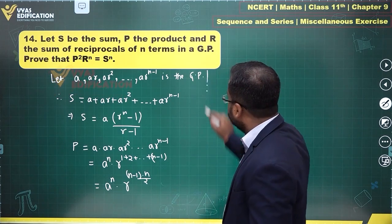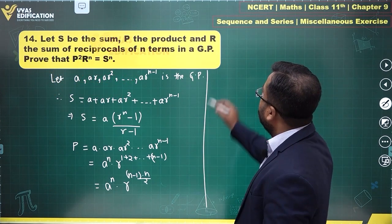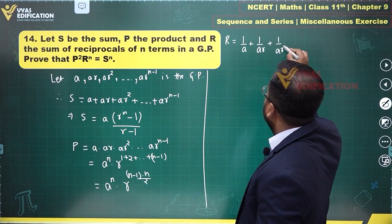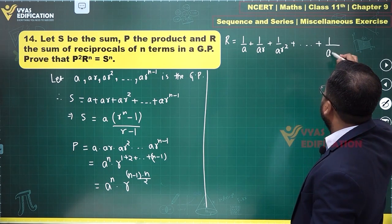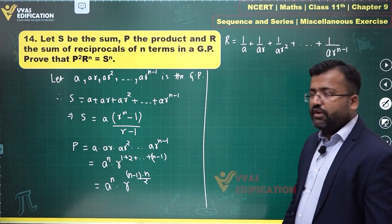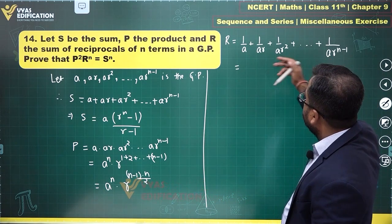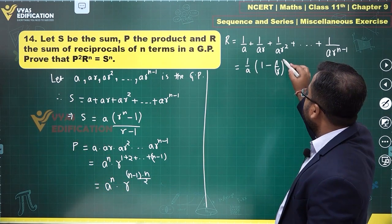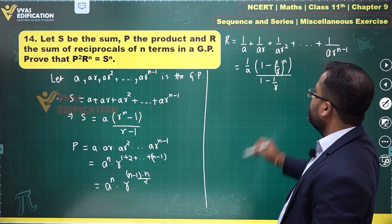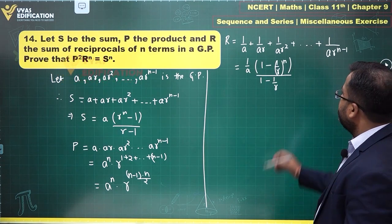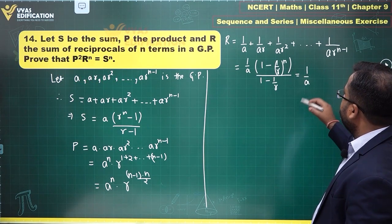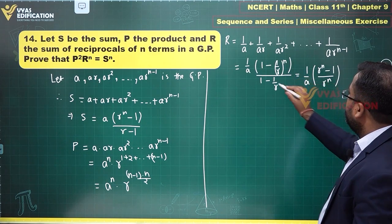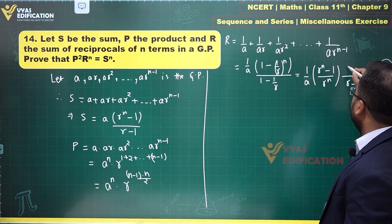R is the sum of reciprocals: 1/a + 1/(ar) + ... + 1/(ar^(n-1)). This is a GP with first term 1/a and common ratio 1/r. Simplifying, R = (1/a) · (1 - (1/r)ⁿ)/(1 - 1/r), which reduces to (rⁿ - 1)/(a · rⁿ · (r - 1)/r) = r(rⁿ - 1) / (a · rⁿ · (r - 1)).